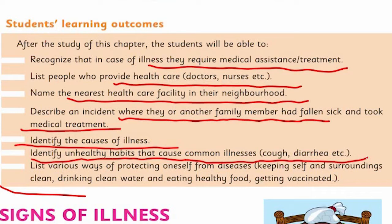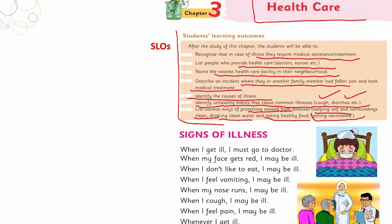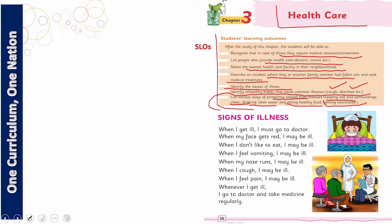We will identify unhealthy habits that cause common illnesses such as cough and diarrhea. We will also list various ways of protecting oneself from diseases, including keeping self and surroundings clean, drinking clean water, eating healthy food, and getting vaccinated. In the last SLO, we will learn how we can protect ourselves from illness.